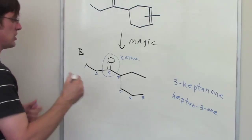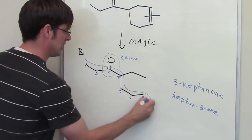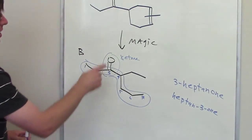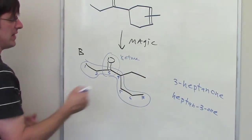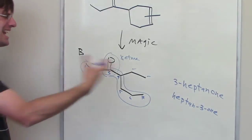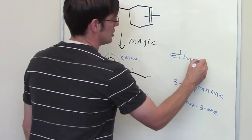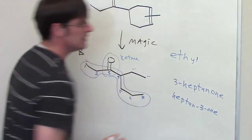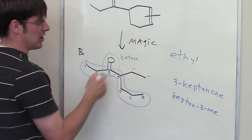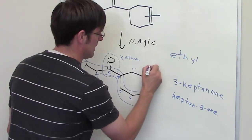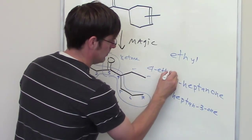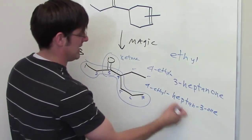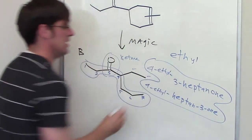Now I have to determine what is a substituent. This is my parent chain, this seven carbon long guy with the carbon-oxygen double bond dangling off of position 3. At carbon 4, I've got a substituent dangling off - it is two carbons long. What is a two carbon long dangly? A two carbon long chain is normally called ethane. When it's a substituent, I drop the -ane and add -yl. So it's an ethyl attached to carbon 4. The final name of this guy is 4-ethyl-3-heptanone or 4-ethylheptan-3-one. Either of those are completely acceptable and correct.